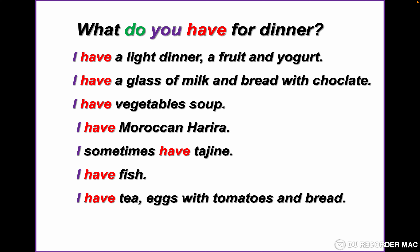I have a glass of milk and bread with chocolate. There is an O missing in chocolate: C-H-O-C-O-L-A-T-E. I have vegetable soup. I have Moroccan Harira — Moroccan Harira is a Moroccan soup. I sometimes have tagine. I have fish. I have tea, eggs with tomatoes, and bread.